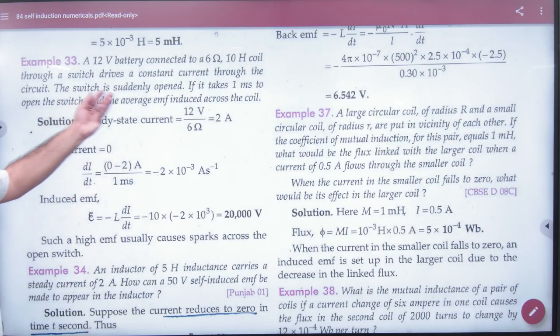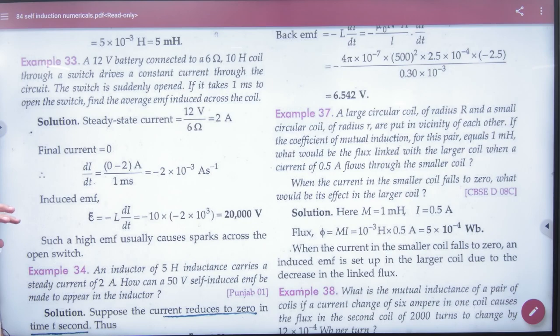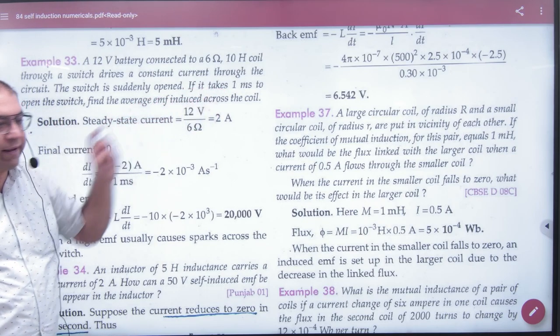Current was 2 ampere flowing. Then it says switch is suddenly opened. I broke the connection. What will happen to current immediately? Zero. So from 2 ampere it will suddenly become zero. Now inductor has a role because current is changing. It will become zero in 1 millisecond.